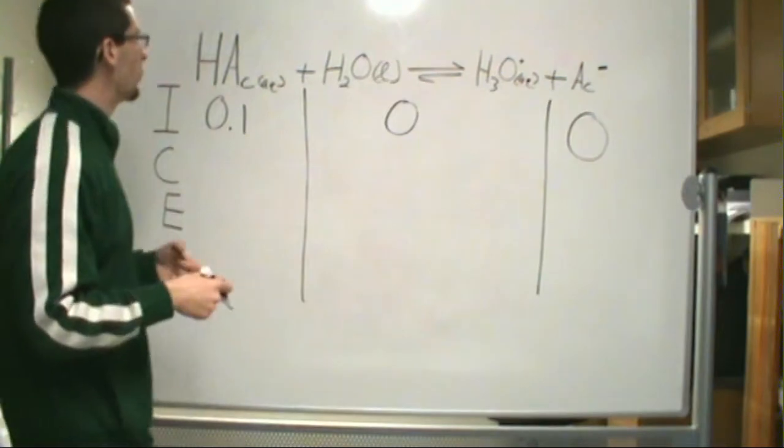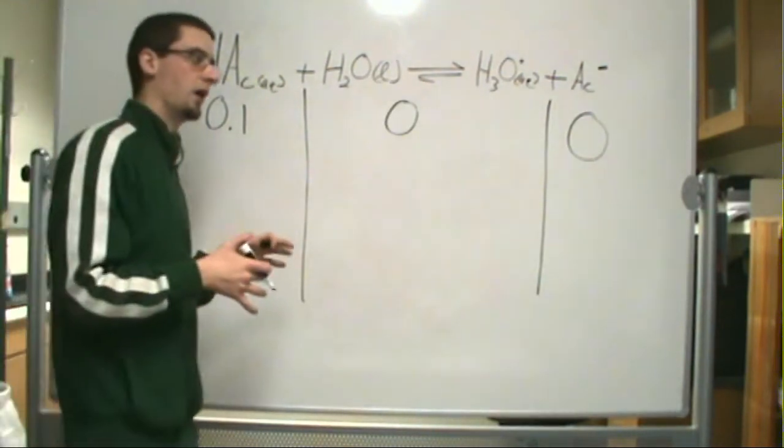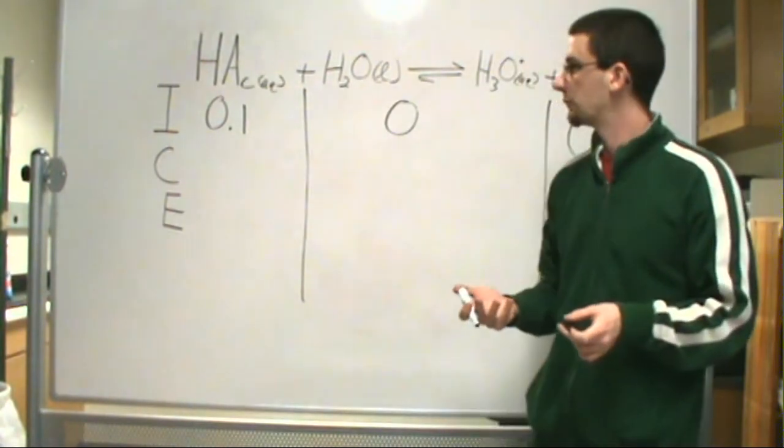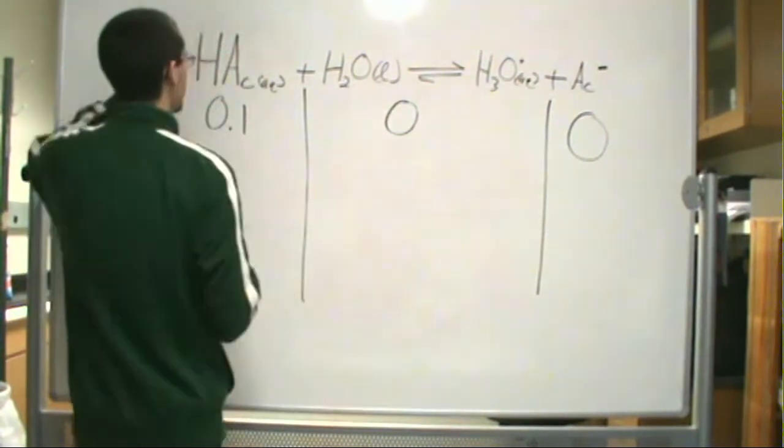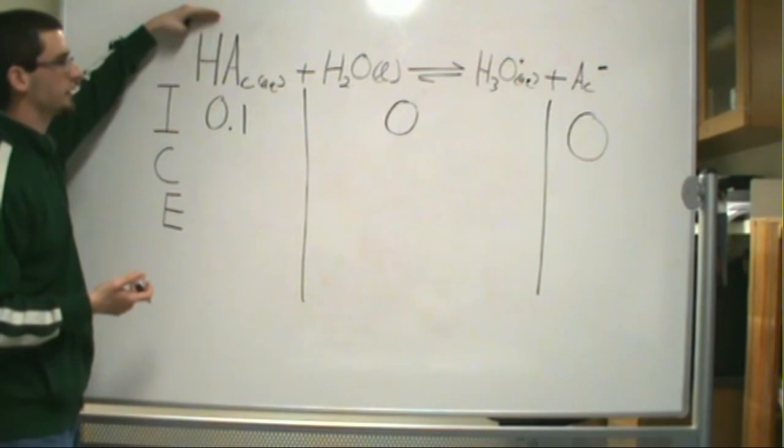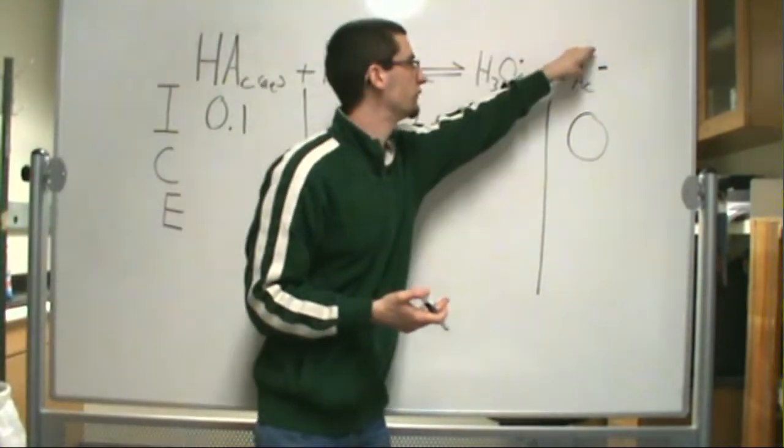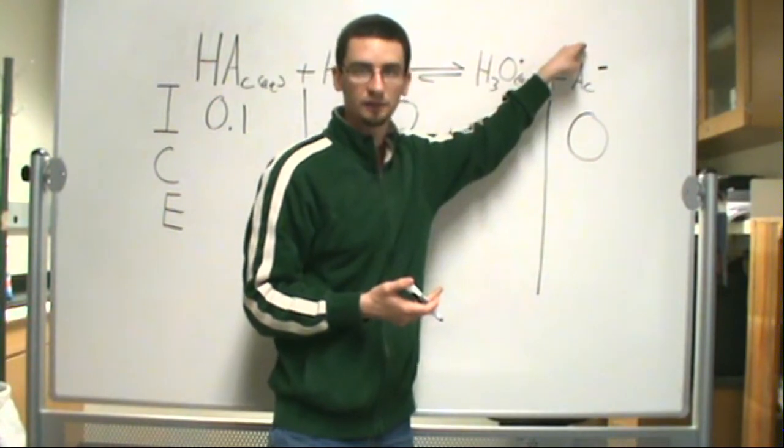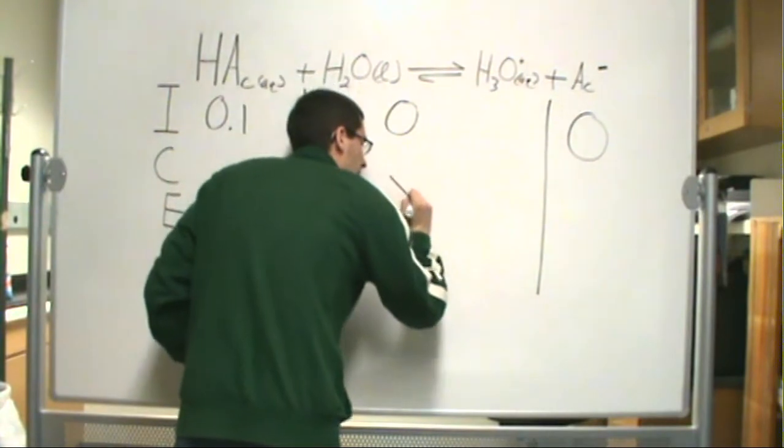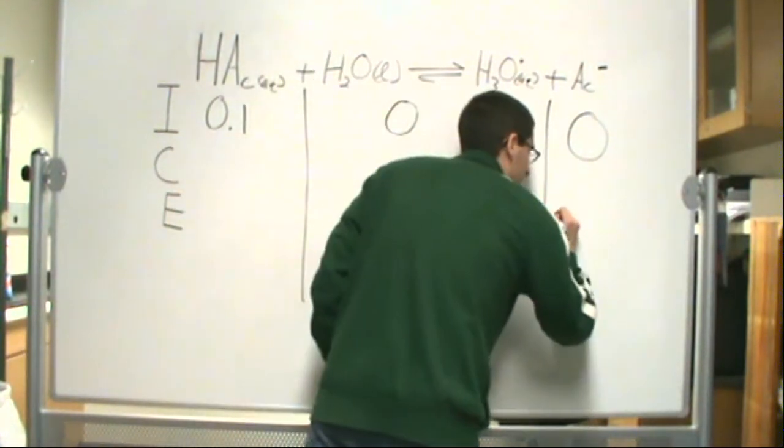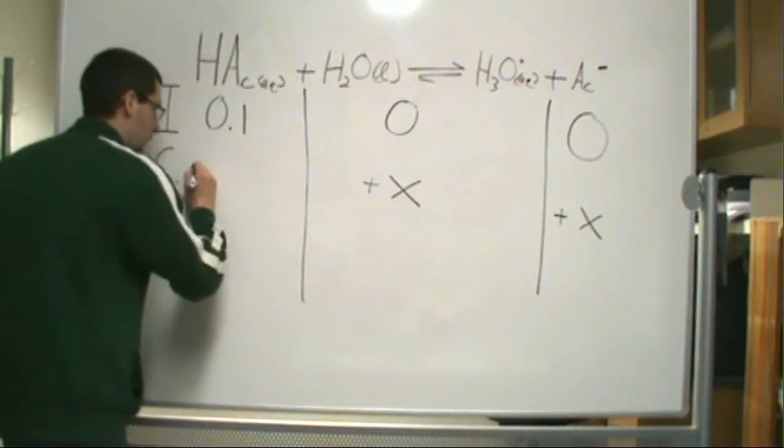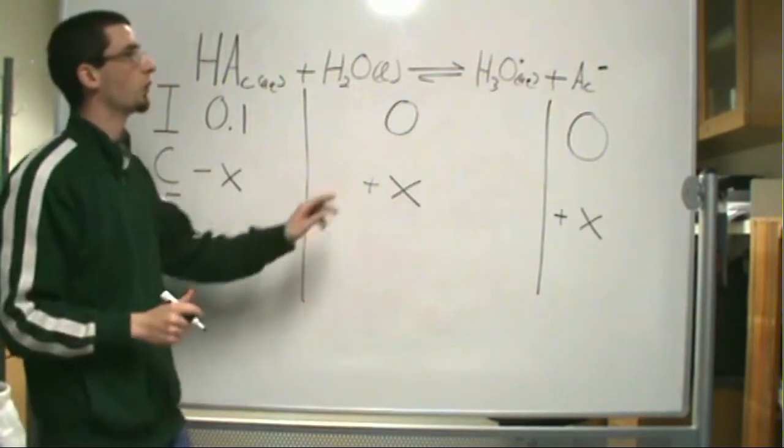Next, we need to determine what is going to be the change of our reactants or our products after we've reached equilibrium. If we just generally assume that one of our acetic acids is going to be consumed, we're going to produce one of each of these, both the hydronium ion and the acetate ion. So we're going to have a change of positive X for these two because they're going to be produced, and we're going to have a negative X for our acetic acid because it's going to be consumed in order to make these two.